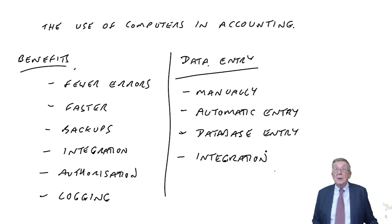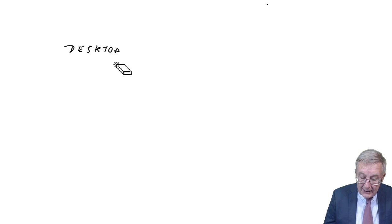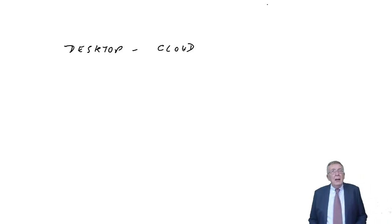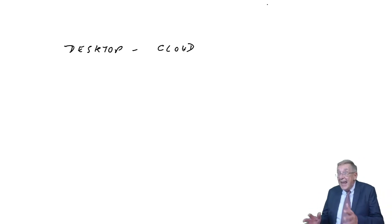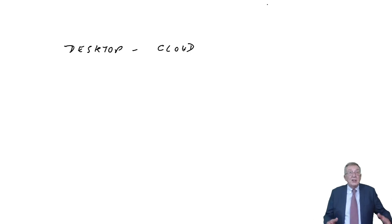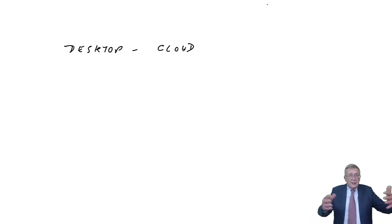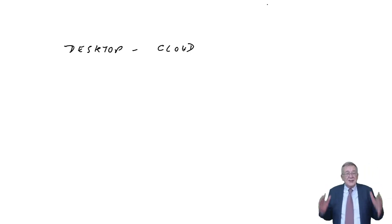There is an important distinction between desktop software and cloud accounting. With desktop accounting, when computers first came in, we bought computers that sat on desks in the office. We'd buy the software — or a big company might have it specially written — and the software sat on our computers in our offices. They could be linked together since several people need to use the software, but we had the software sat on our desks.